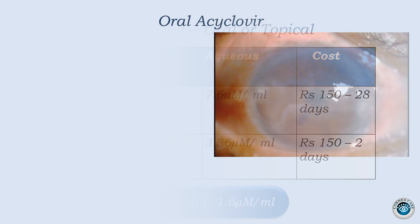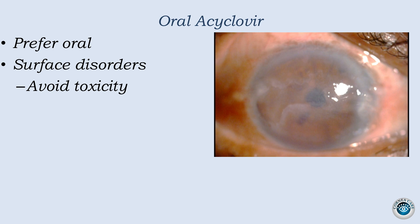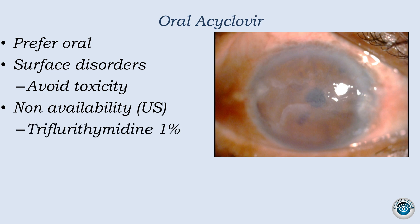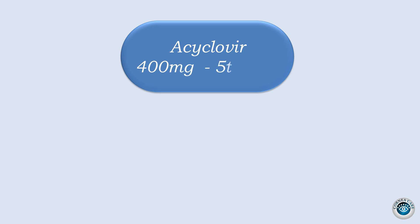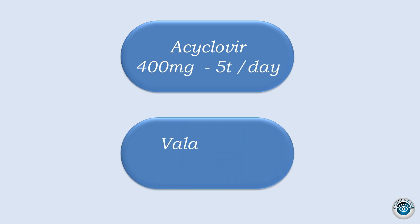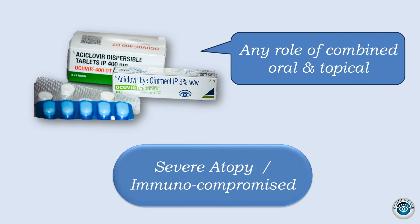There are certain scenarios where we prefer oral — mostly when the ocular surface is bad and we don't want acyclovir to cause further toxicity. Oral was used a lot in the USA because topical acyclovir was not available and the available drug had a very frequent cumbersome dosing schedule. In oral we have two options: acyclovir 400 mg 5 times a day, or its pro-drug valacyclovir 500 mg 3 times a day, which is considered the therapeutic dose for HSV. Regarding combined topical and oral, it is usually advocated for immunocompromised people.